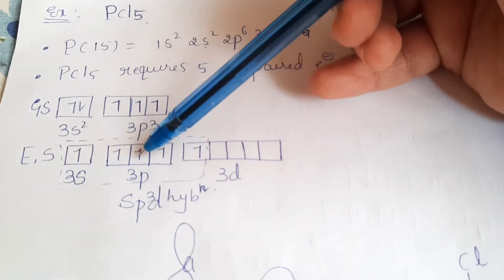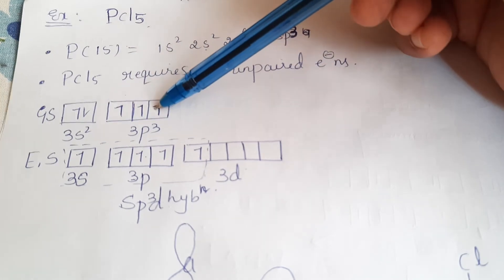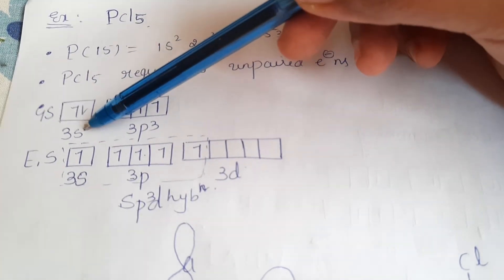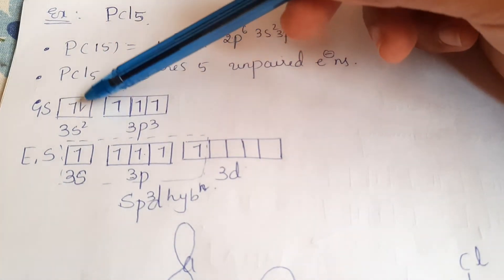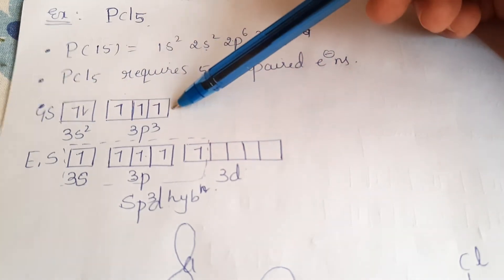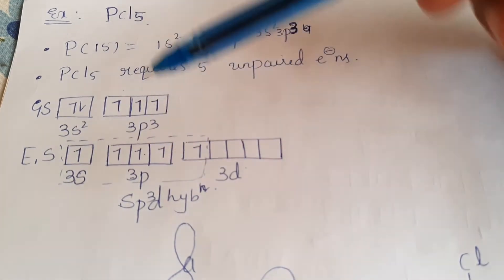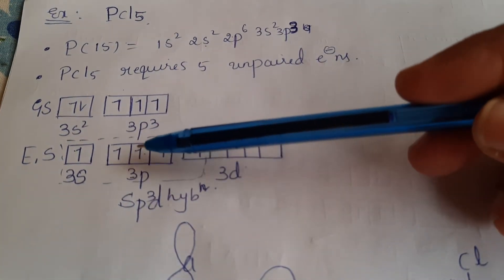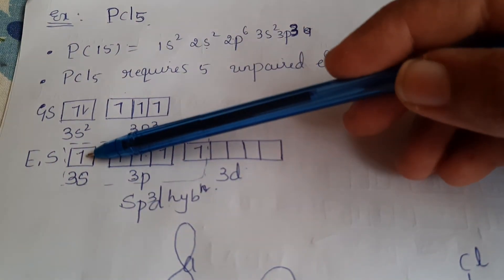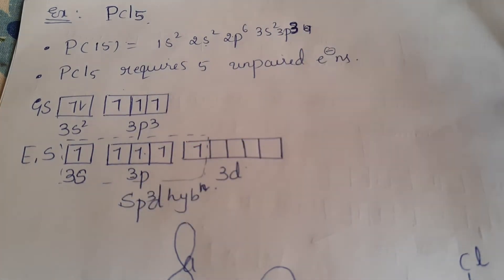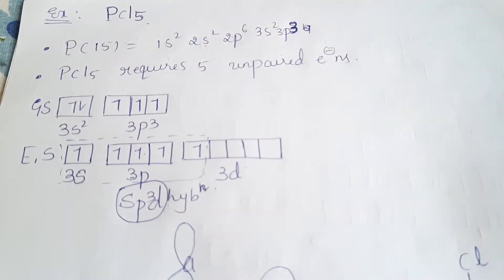The unpaired electron shifts to the D orbital, giving the excited state of phosphorus. With 1S, 3P orbitals, and 1D orbital involved in hybridization, this is called SP³D hybridization. So phosphorus undergoes SP³D hybridization to accommodate five bonding orbitals.